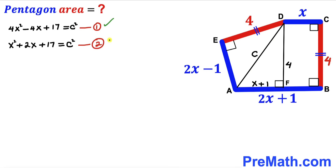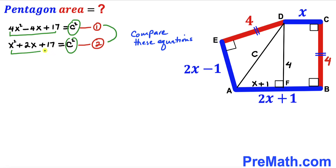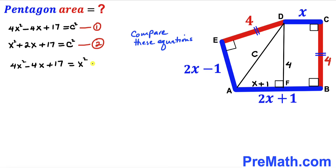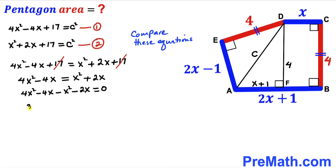We compare Equations 1 and 2. Since the right-hand sides are identical, we equate the left-hand sides: 4x² − 4x + 17 = x² + 2x + 17. The 17s cancel, and moving everything to one side and combining like terms gives 3x² − 6x = 0. Dividing through by 3 gives x² − 2x = 0.